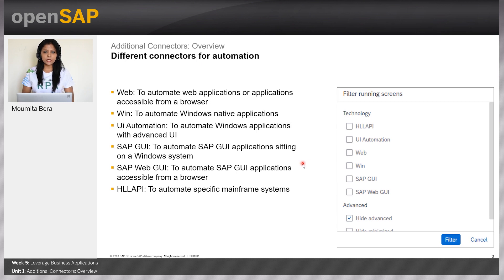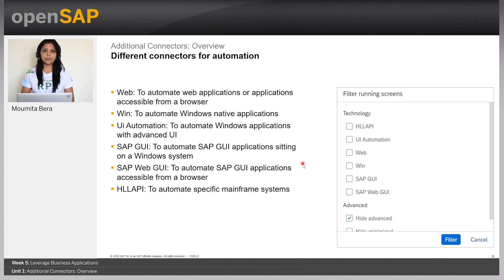The web connector is mainly used to automate applications based on browsers, or web applications. The Windows and UI Automation connectors are used to automate Windows applications. For simple applications we can use the Win connector, but for complex and advanced UI-based Windows applications we need to use the UI Automation connector.